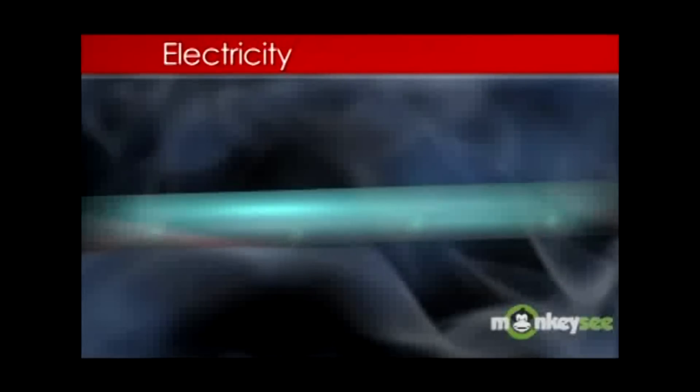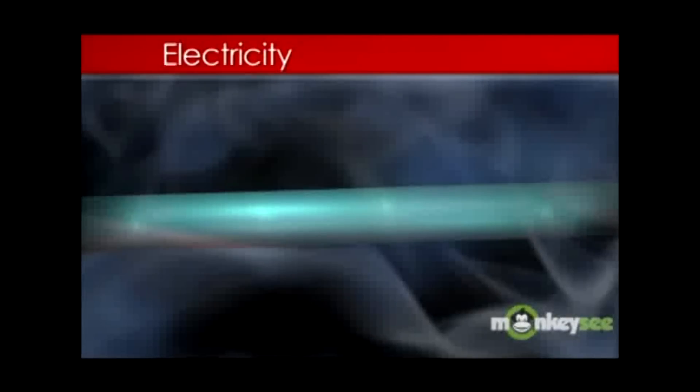Current electricity travels. It is composed of flowing electrons passing from one atom to another through a conductive material. It is this form of electricity that powers our homes.